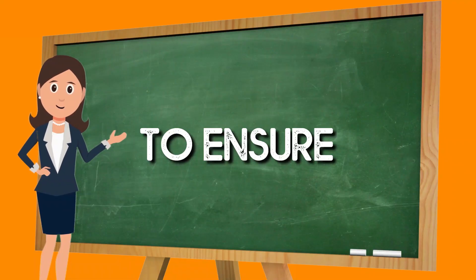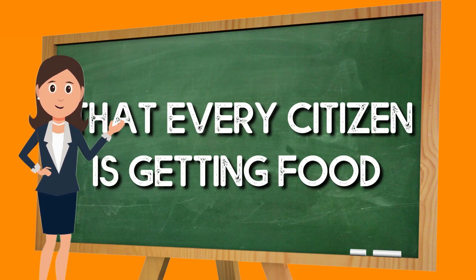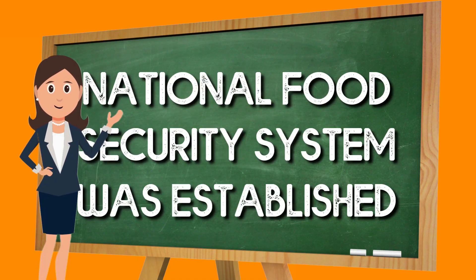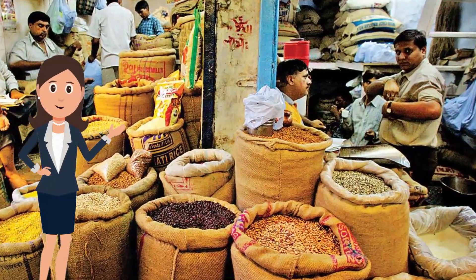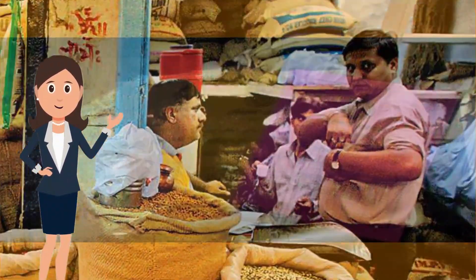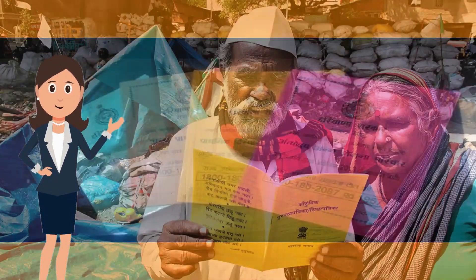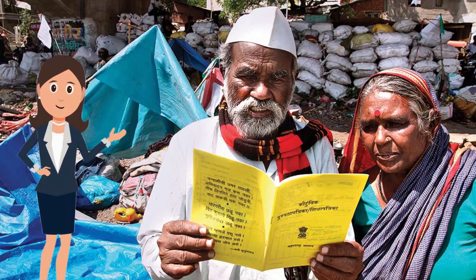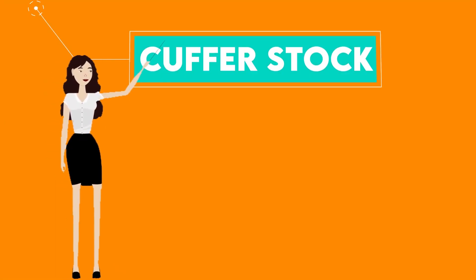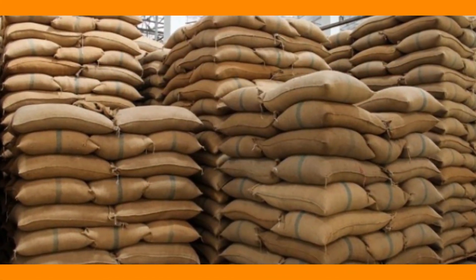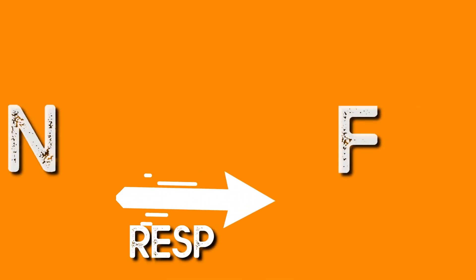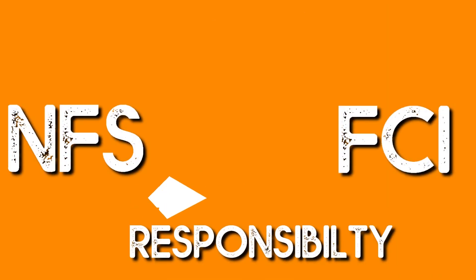To ensure that every citizen has food, the National Food Security System was established. This system is divided into two parts. Number 1 is the Public Distribution System. In rural and urban areas there are government ration shops where people with a BPL card can purchase groceries. Number 2 is Buffer Stocks, where extra production is stored for future use. The National Food Security System is managed by the FCI, the Food Corporation of India.